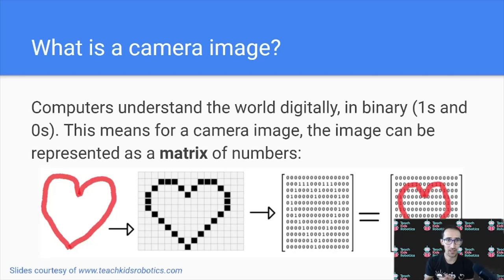But how does this work really? Let's first consider what is a camera image. Since computers understand the world digitally, in binary with ones and zeros, this means that for a camera image, the image must be represented digitally as well.